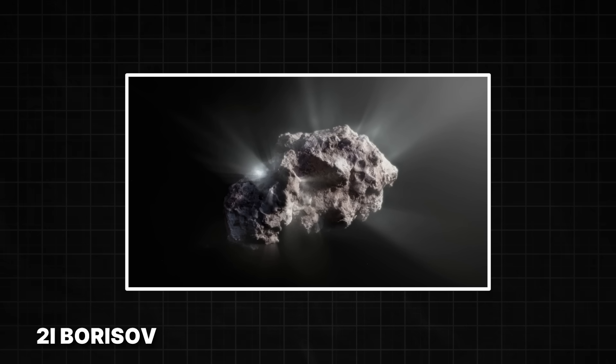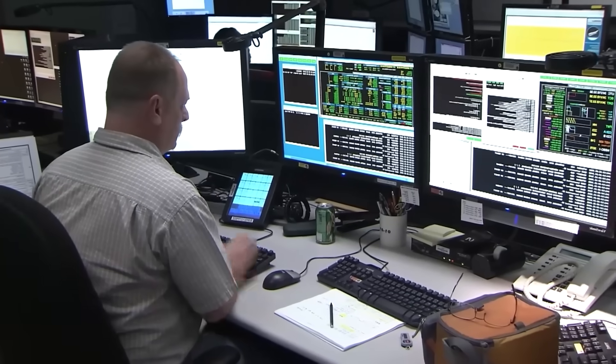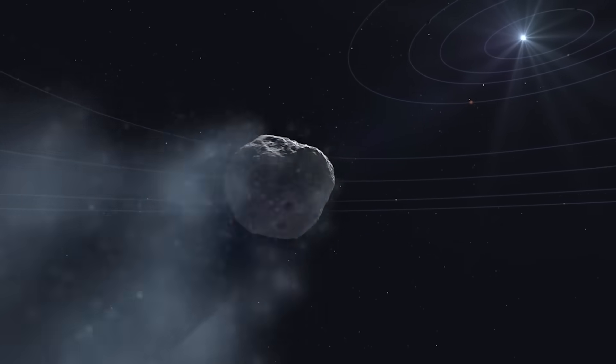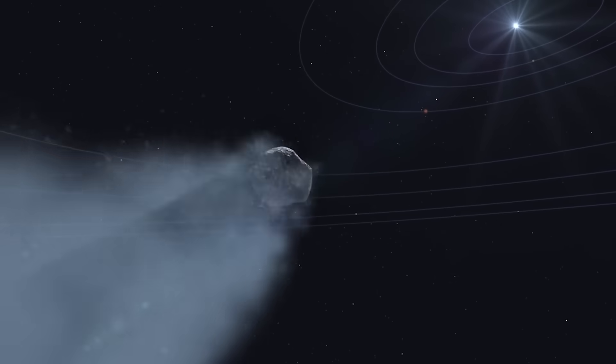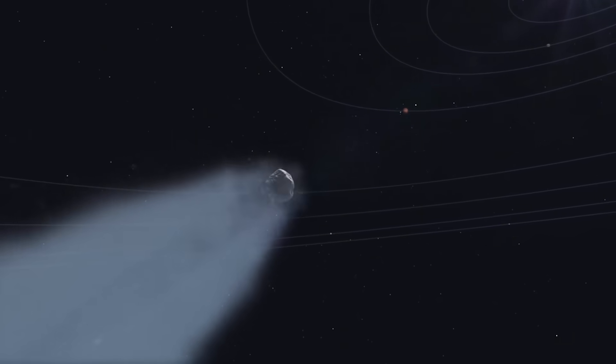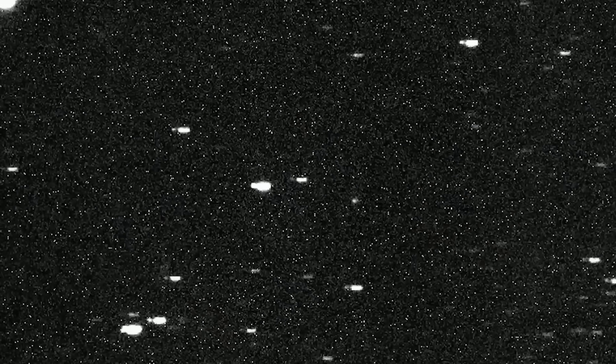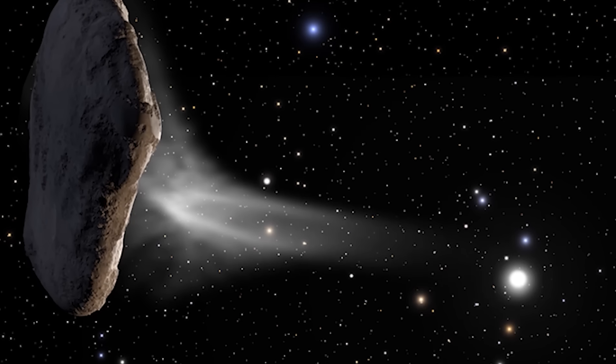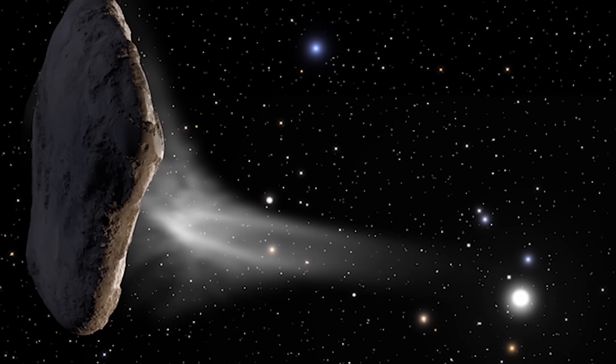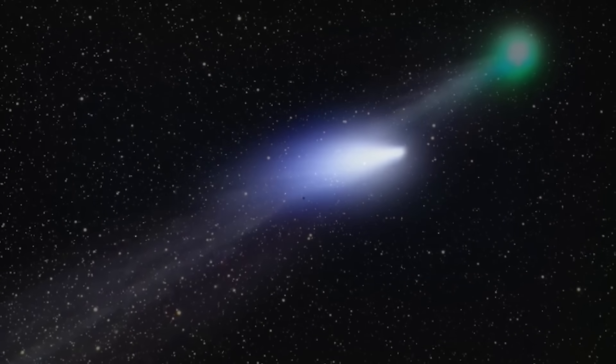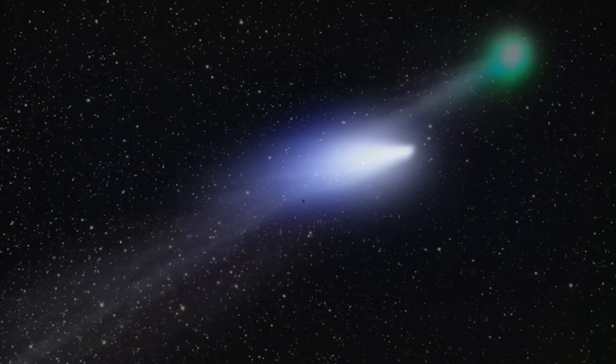Then came the second visitor, 2-I Borisov. At first, Borisov seemed to be the opposite of Oumuamua. It was a more conventional comet, with a visible tail of gas and dust. Many in the scientific community breathed a sigh of relief. See? Oumuamua was just a fluke, a one-in-a-million weirdo. So, Borisov proved that interstellar objects were just normal comets from other star systems.